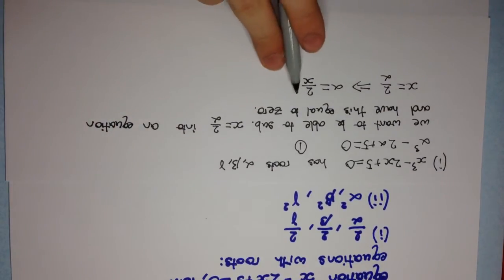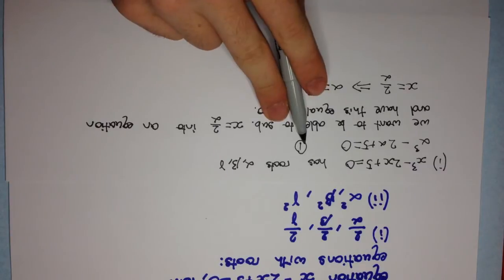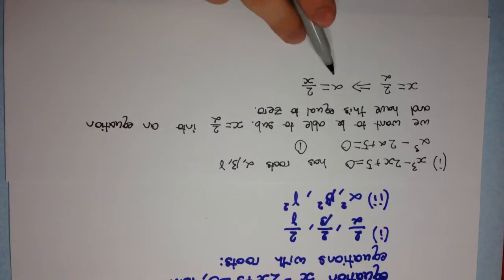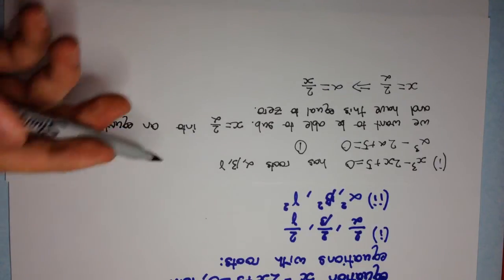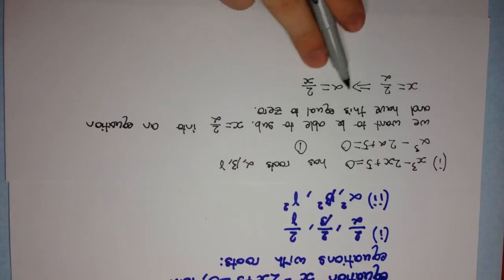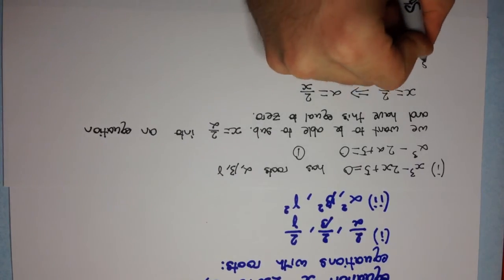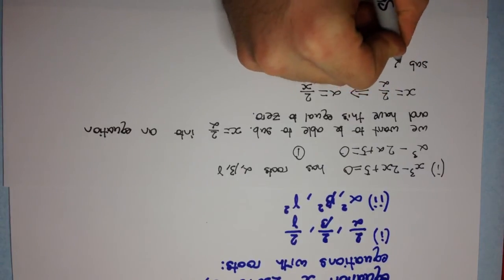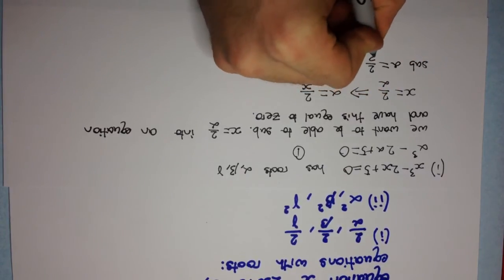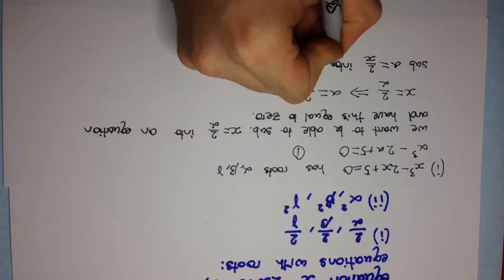So now we can substitute this into equation 1, and we'll get a polynomial in x that has roots of 2 over alpha, and 2 over beta, and 2 over gamma. But we only need to write it for alpha equals 2 over x. So anyway, substituting this in, sub alpha equals 2 over x into 1.